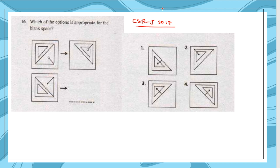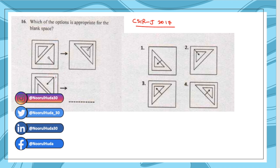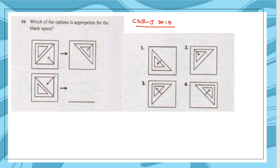This question is from CSIR June 2017. In image analysis questions, they give you a sequence of images and ask what the next image will be. Based upon what changes are being made you have to analyze and answer. They are super simple to solve, but people who skip the aptitude part and dedicate three hours to chemistry usually miss this portion — although these questions can easily fetch at least two marks, and in CSIR or any competitive exam, two marks are a lot.